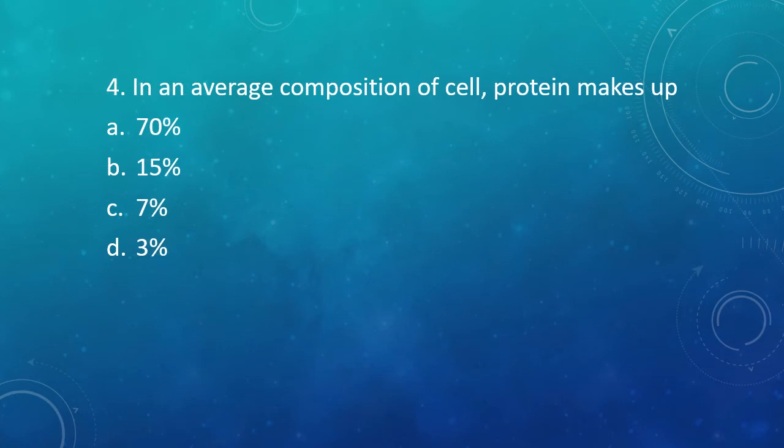Question 4: In an average composition of a cell, protein makes up what percent of the cell? The correct answer is Option B, that is 15%. 70% of the cell is made up of water, 15% is made up of proteins, 7% is nucleic acids, and 3% is carbohydrates.